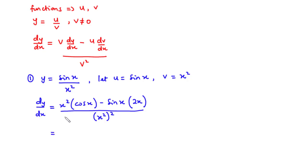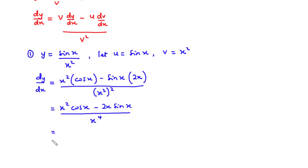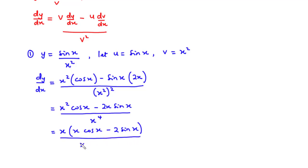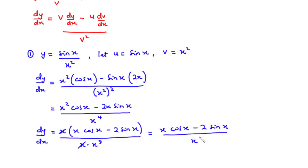Now let's simplify. x is common to both terms in the numerator, so we factor out x. Inside the bracket we have x cos(x) minus 2 sin(x), all divided by x times x to the power 3. x cancels out, so we have dy/dx equal to x cos(x) minus 2 sin(x), all divided by x cubed.